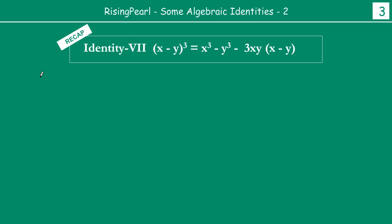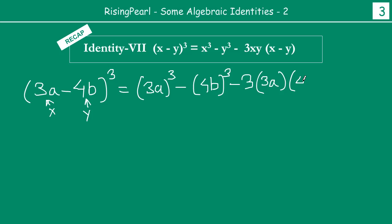When you are given questions like, suppose, expand 3a minus 4b whole cube, write this in expanded format, you basically just have to apply the formula and expand it. So you are going to take 3a as x, suppose, and you will take this as y. So this becomes x cube minus y cube minus 3x times y which is 4b times x minus y, x minus y.